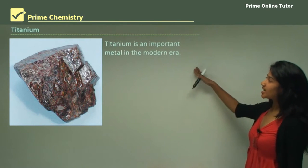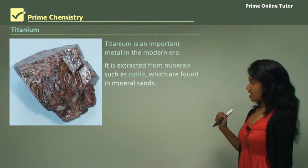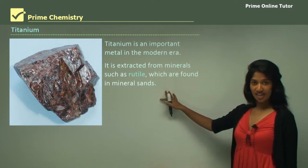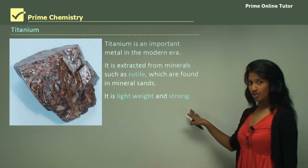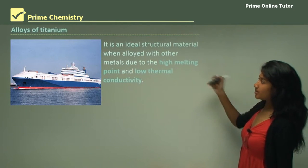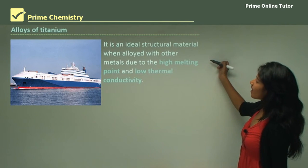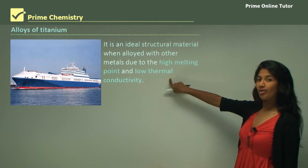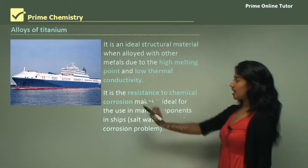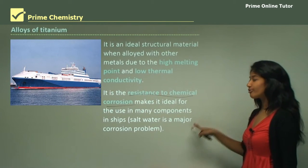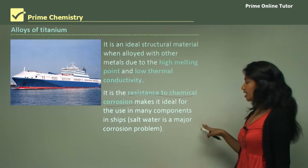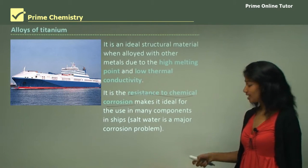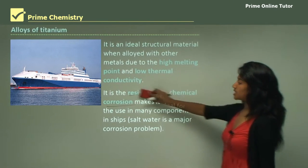Moving on to titanium. Titanium is also an important metal in the modern era. It is extracted from its mineral rutile, which is found in mineral sands. It is lightweight but strong, so it's a very useful metal. Titanium alloys are usually used for structural materials — they have very good melting points and also a low thermal conductivity. The main advantage is that it's resistant to chemical corrosion, which makes it a great building material for components in ships. Salt water is a major corrosion problem because salt water triggers corrosion, and since titanium is corrosion resistant, it is a good metal to be used.